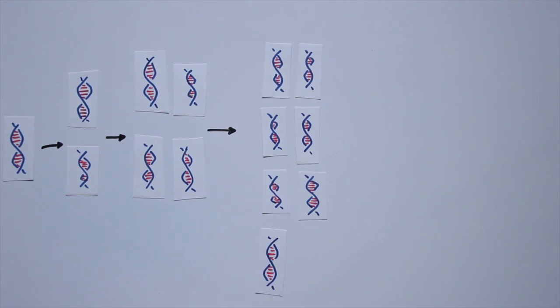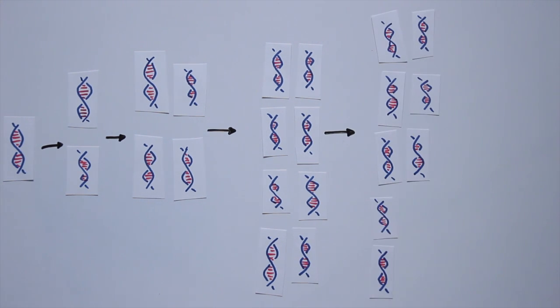PCR runs in cycles. With each cycle of the reaction, the enzyme will double the amount of DNA. As you can see, after just four cycles, we have gone from one piece to 16 pieces of DNA.